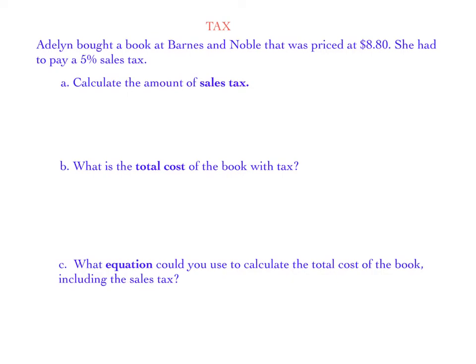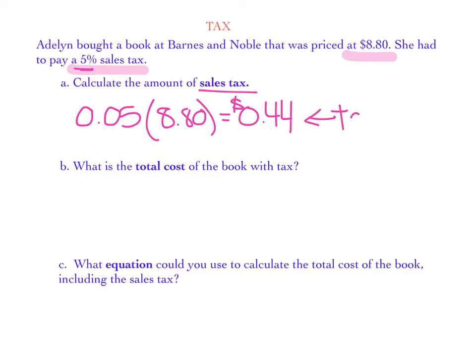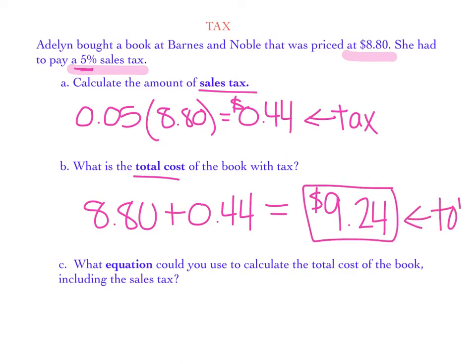Edelyn bought a book at Barnes and Noble that was priced at $8.80. She had to pay a 5% sales tax, and we want to calculate first the amount of the sales tax. So using an equation, I'm just going to do 5% of $8.80. So 5% I know is 0.05 because to take any percent and turn it into a decimal, I divide it by 100. So 5% of $8.80 will give me 0.05 times 8.80 is 44 cents. Now that's the amount of our sales tax that she's going to have to add on to her total bill. So the total cost of the book with tax is $8.80 plus the amount that we calculated for tax, 44 cents, and we have a grand total of $9.24. Now that was her total bill including the tax.